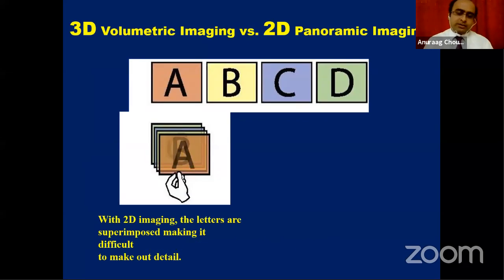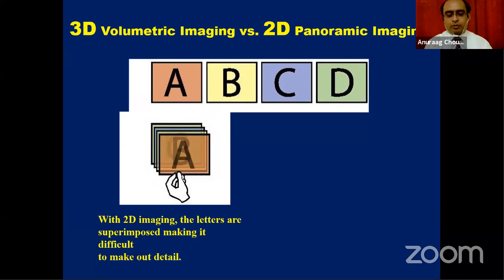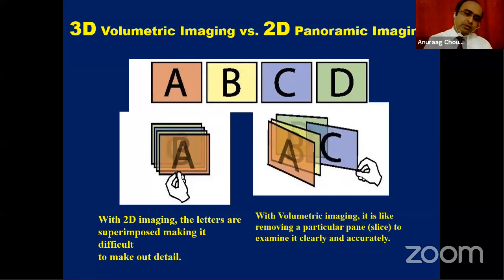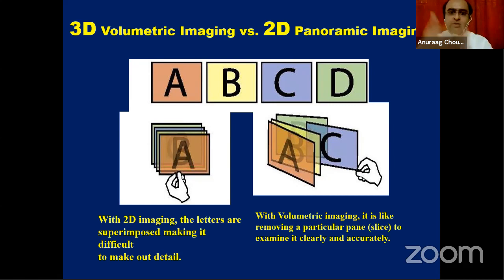Here is a graphical presentation: 2D versus 3D. In 2D imaging, when we compile letters A, B, C, and D and stack them, superimposition is clearly seen — this is what we see in maxillofacial 2D images. Volume rendering 3D imaging takes particular sections at a specific level, so we can precisely identify the orientation and extent of the fracture line.